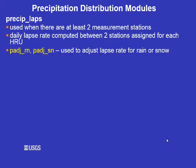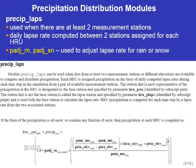The precip_lapse module assigns two measurement stations to each HRU and computes a daily lapse rate between those stations at each HRU. It has an adjustment factor for rain or snow. Equation 131 from the PRMS manual shows the precipitation calculations if it is all snow.